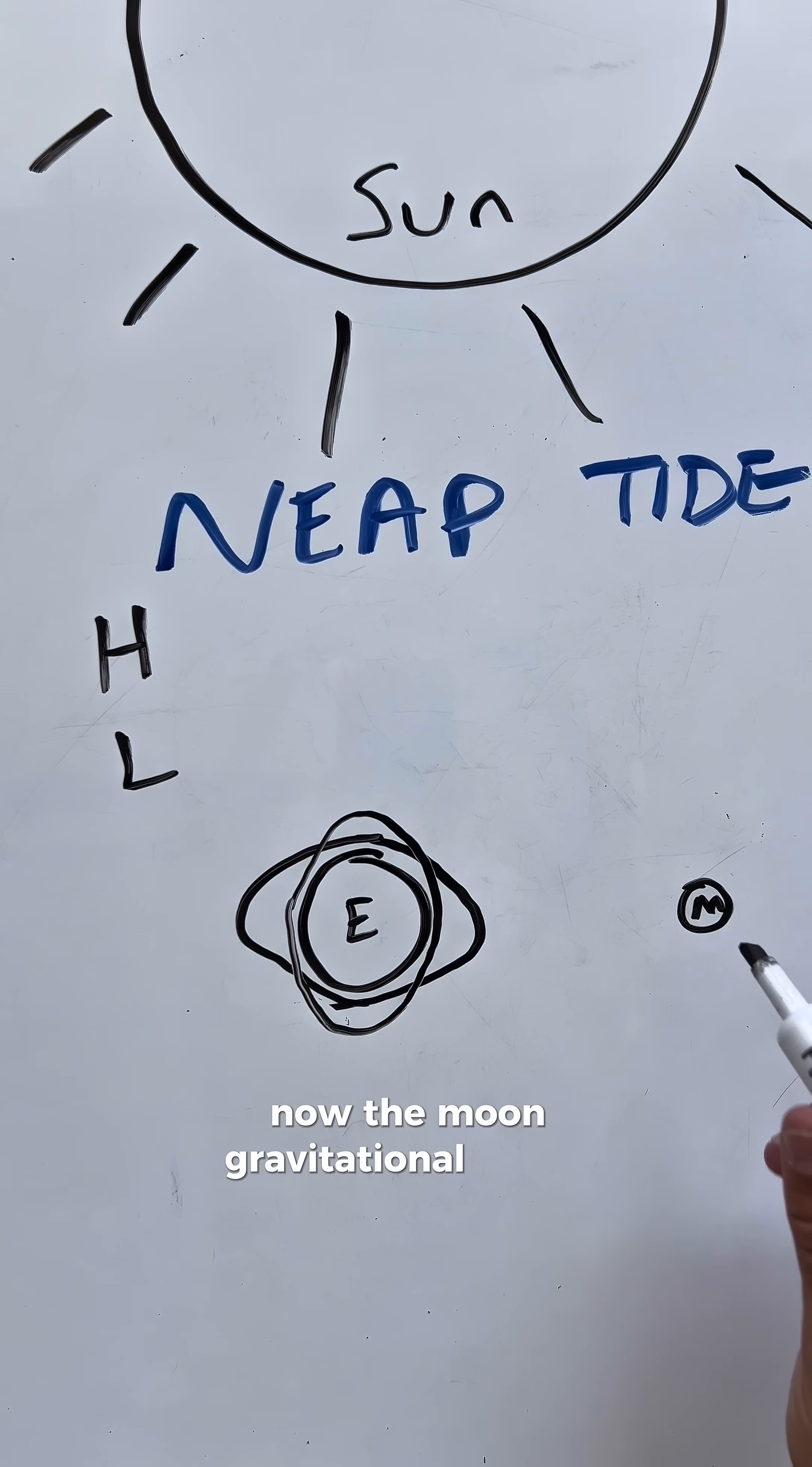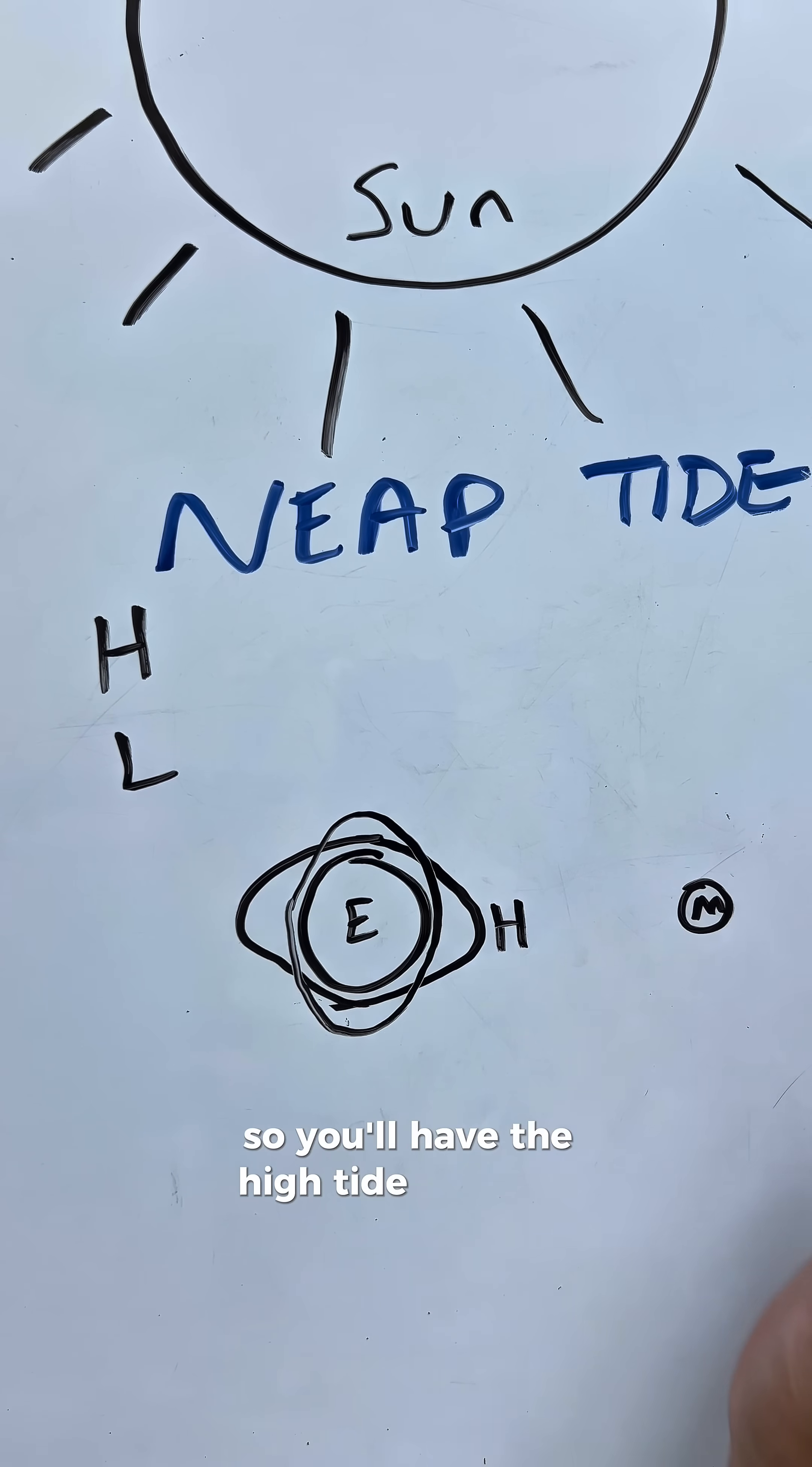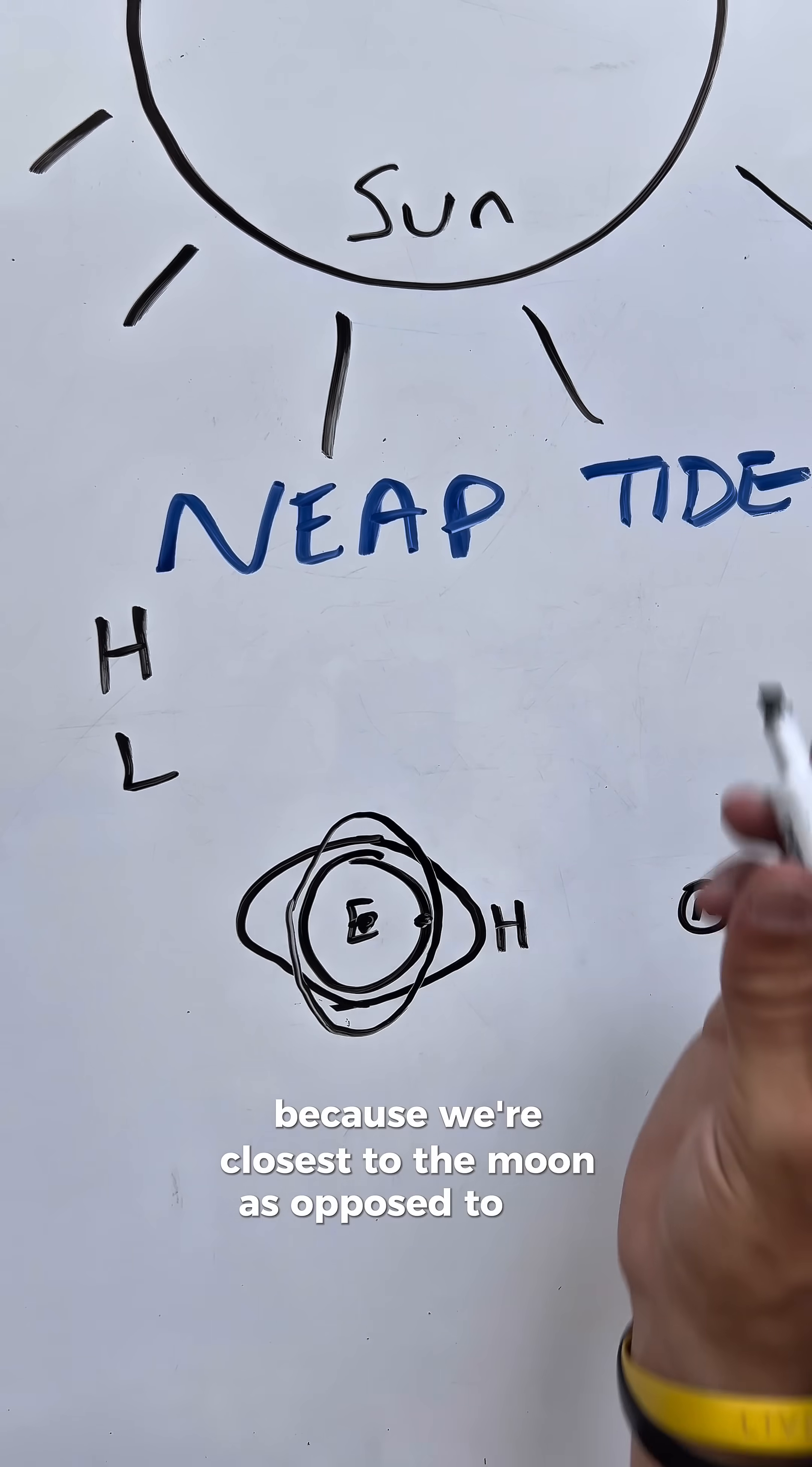Now the moon's gravitational pull is stronger than the sun, so you'll have the high tide this side. We're looking at the north pole, and we are right here. So right now we're at high tide because we're closest to the moon as opposed to the sun.